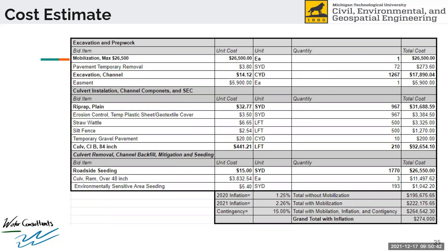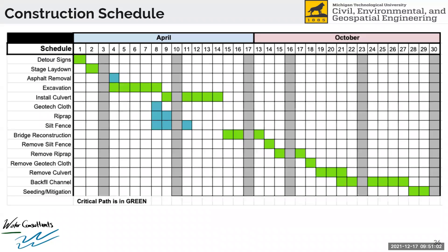As a rough guideline from MDOT, we used a mobilization cost of about 10% of the total project cost. We used 1.25% for inflation for 2020 and 2.26% for 2021, as well as a contingency rate of 15%, coming out to a grand total of about $274,000. Here's our final schedule. The critical path is in green and tasks that need to be ongoing at all times are in blue — that mostly applies to soil erosion prevention. The schedule jumps from April to October because in the middle of the project they have to demolish and replace the bridge. We chose beginning of April to end of October because that's pretty much the construction window for this area, making sure we're not getting too far into the winter months.